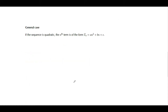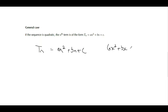Moving on — with quadratic sequences there is an nth term, which we call our general case, in the form T(n) = an² + bn + c. This should look familiar because it's basically the same as ax² + bx + c — a quadratic equation — but this is for a sequence. This is the rule that it follows, the general case pattern.